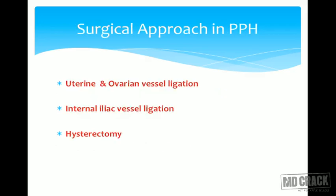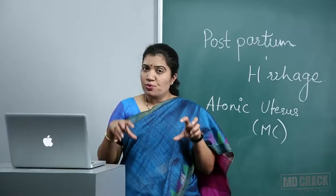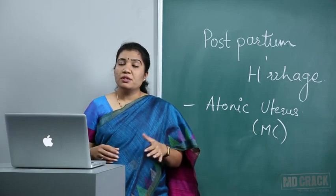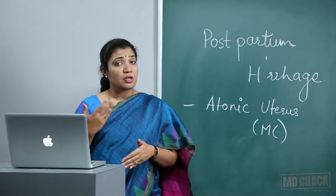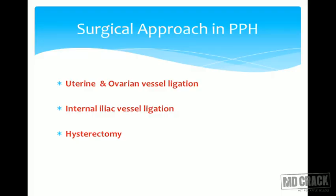For systemic devascularisation, the uterus receives its main supply from the uterine and ovarian arteries — during pregnancy, the ovarian artery is almost as large as the uterine artery. Ligate both the uterine and ovarian vessels on both sides. If the bleeding surface continues, proceed to internal iliac artery ligation. This procedure is technically demanding but can be mastered with practice, and every gynaecologist should know how to perform internal iliac ligation.